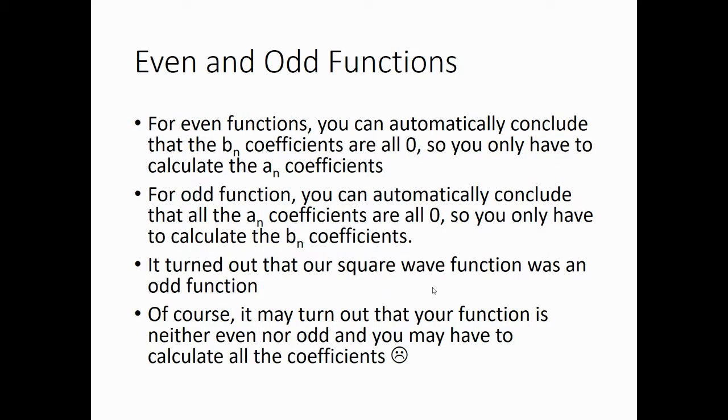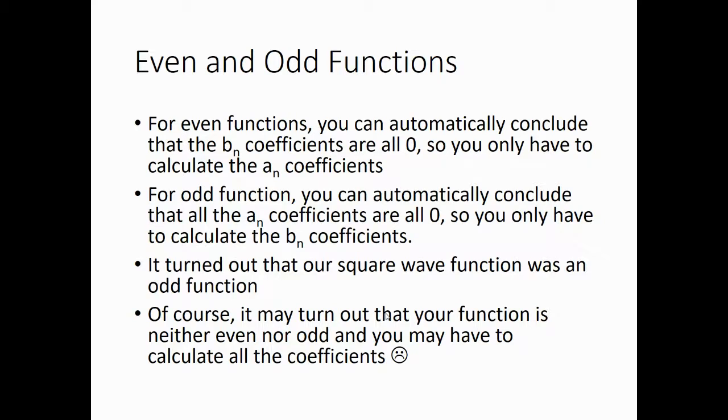For even functions, you can automatically conclude that the bn coefficients are all zero. So you only have to calculate the a sub n coefficients. For the odd functions, you can automatically conclude the a sub n coefficients are all zero. So you only have to calculate the b sub n coefficients. Turns out that our square wave function was an odd function. Yeah, it seems pretty odd to me. Of course, it may turn out that your function is neither even nor odd, and you may have to calculate all those coefficients. In which case, it's kind of a sad case.